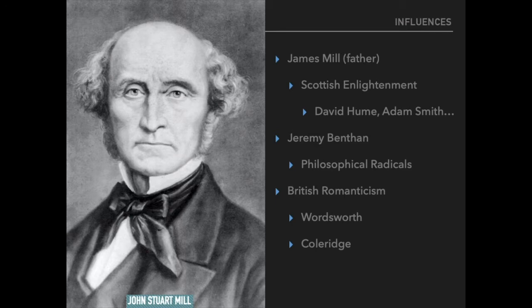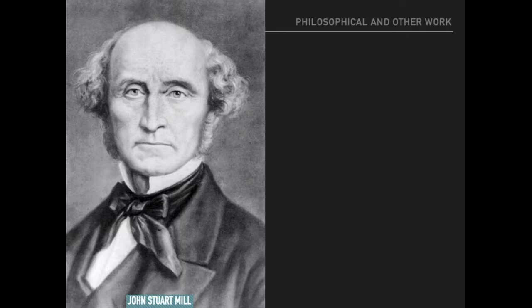He would go on throughout the rest of his life attempting to synthesize the sort of Enlightenment empiricism and utilitarianism of his father with the insights that he found in Romanticism. In his own life, Mill was well known primarily as a politician and a reformer, as well as a philosopher, but primarily for his work in theoretical philosophy. He was a naturalist and an empiricist, and he did a lot to advance our understanding of inductive inference and was an important thinker in the early discussions of what would become philosophy of science. He was also a political economist — political economy being the 19th century science that would eventually become known as economics.